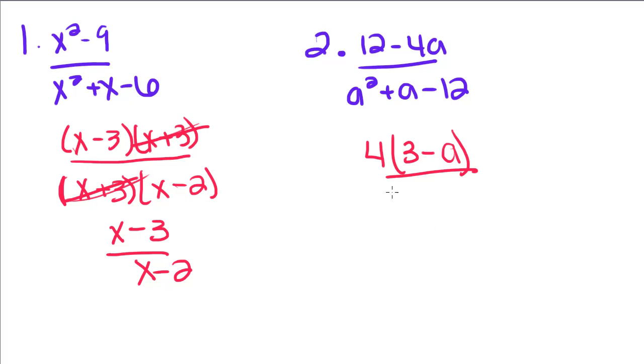And then the bottom will factor as well, and we'll get an a here and an a here. The two factors of 12 that are going to add to give us a 1 is going to be 3 and 4. Since it's a negative 12 and we want a positive 1, we're going to have positive 4, negative 3.